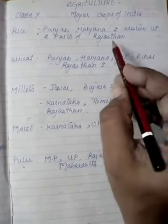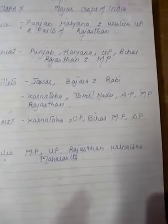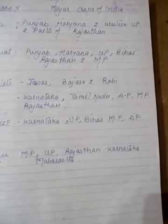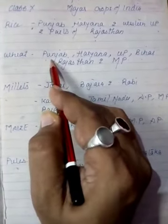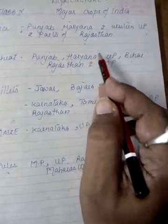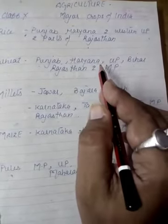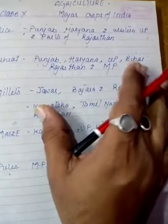Rice is grown in Punjab, Haryana, Western UP, parts of Rajasthan and MP. The second important crop of India is wheat. It is the main crop in the northern and northwestern part of India, mostly grown in Punjab, Haryana, UP, Bihar, Rajasthan, and MP.